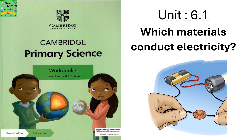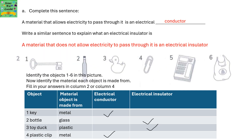Unit 6.1: Which materials conduct electricity? Complete the following sentence: a material that allows electricity to pass through it is an electrical conductor. Write a similar sentence to explain what an electrical insulator is. An electrical insulator is any material that does not allow electricity to pass through it.